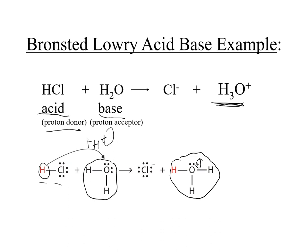What's left after we remove that hydrogen ion is chlorine — chloride with a negative one charge. This is an example of an acid-base reaction. Again, your acid is your proton donor, the one that donates the hydrogen ion, and the base is the one that accepts the hydrogen ion.